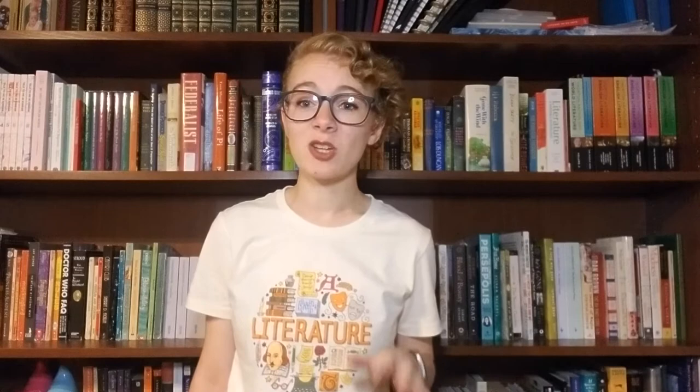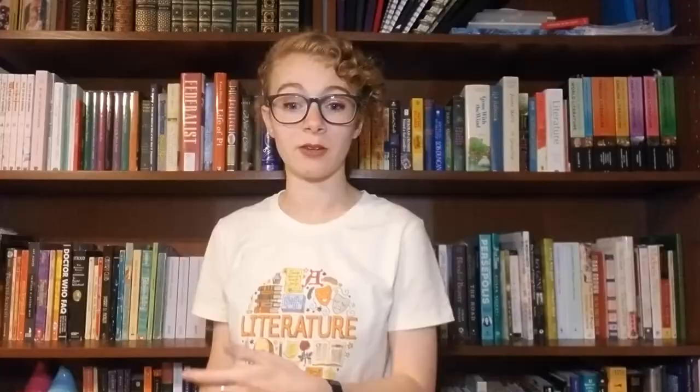In 1895, when Virginia was 13, her mother died. Her half-sister died shortly after in 1897. In 1904, her father died. As she was dealing with the deaths in her family, her half-brothers sexually abused her and her sister. These traumas led to Woolf's first nervous breakdown. In 1906, her brother died, and she saved herself from another breakdown through her writing.